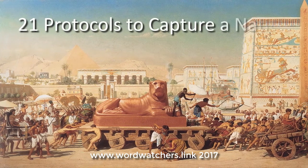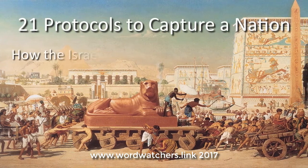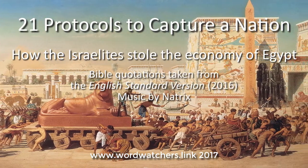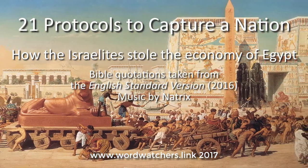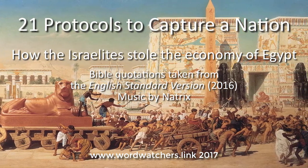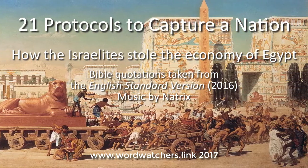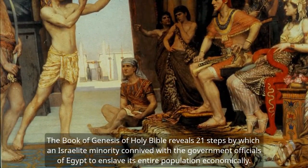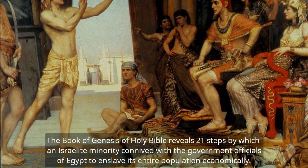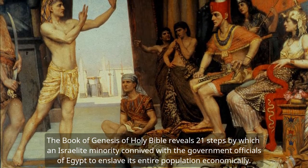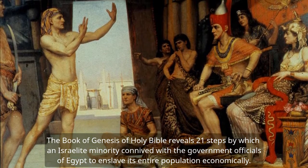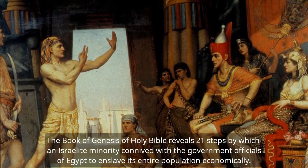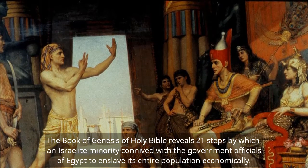21 Protocols to Capture a Nation: How the Israelites Stole the Economy of Egypt. The Book of Genesis of the Holy Bible reveals 21 steps by which an Israelite minority connived with government officials of Egypt to enslave its entire population economically.